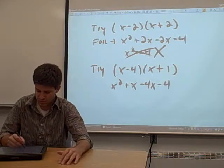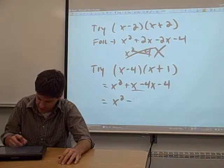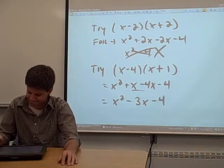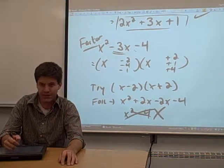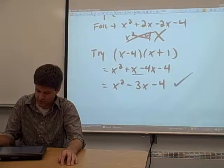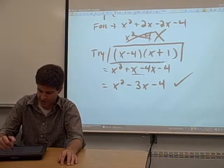Now we combine our two like terms in the middle, and we get x squared minus 3x minus 4, which is exactly what we wanted. So this is how we factor that trinomial.